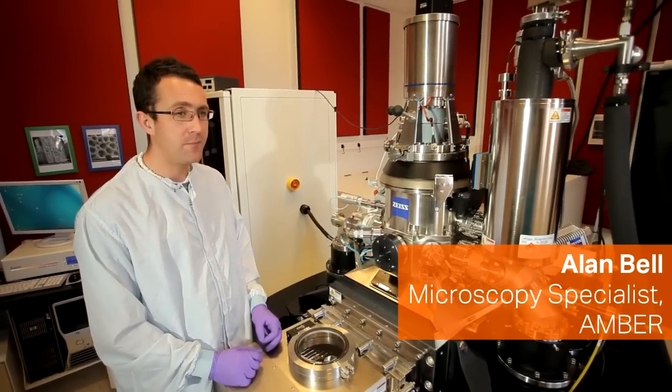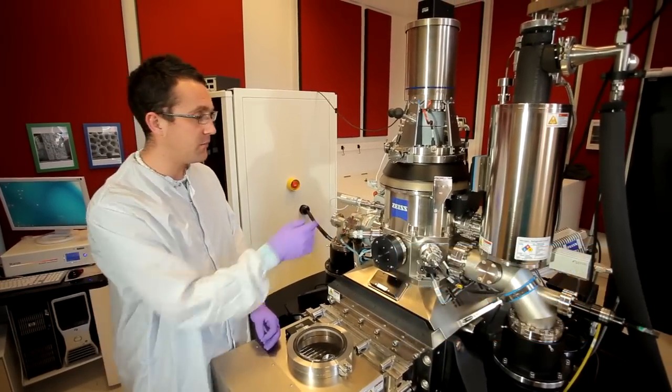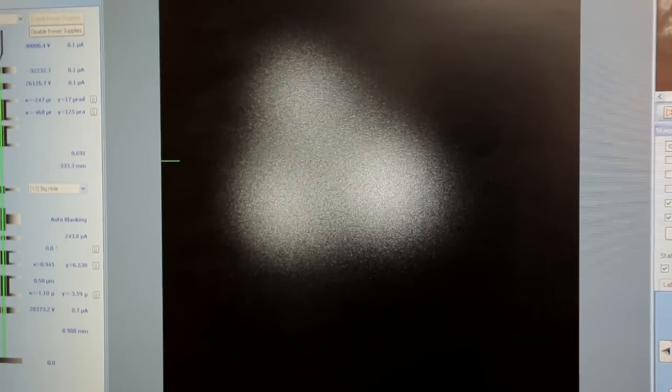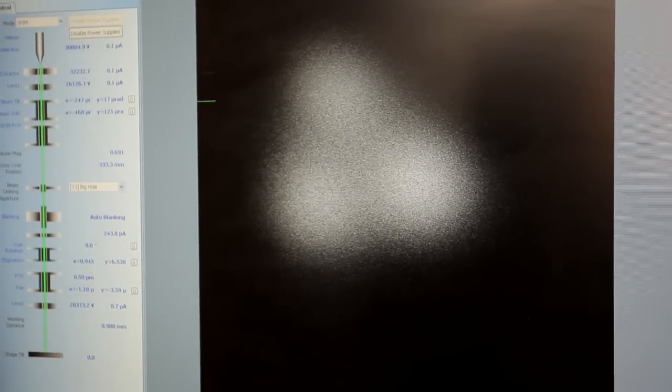This is our helium ion microscope and the way it works is that inside in the column we have a wire not dissimilar to the wire here, and the wire is very sharp at the end. At the end it gets so sharp that all we are left with is three atoms.